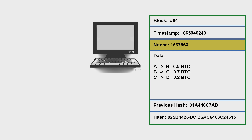In this block we are familiar with the block number. We have just understood about timestamp in the previous video, we know what nonce is, and of course the previous hash. In the data field we have a collection of transactions, so the question is: how does the miner select these transactions?